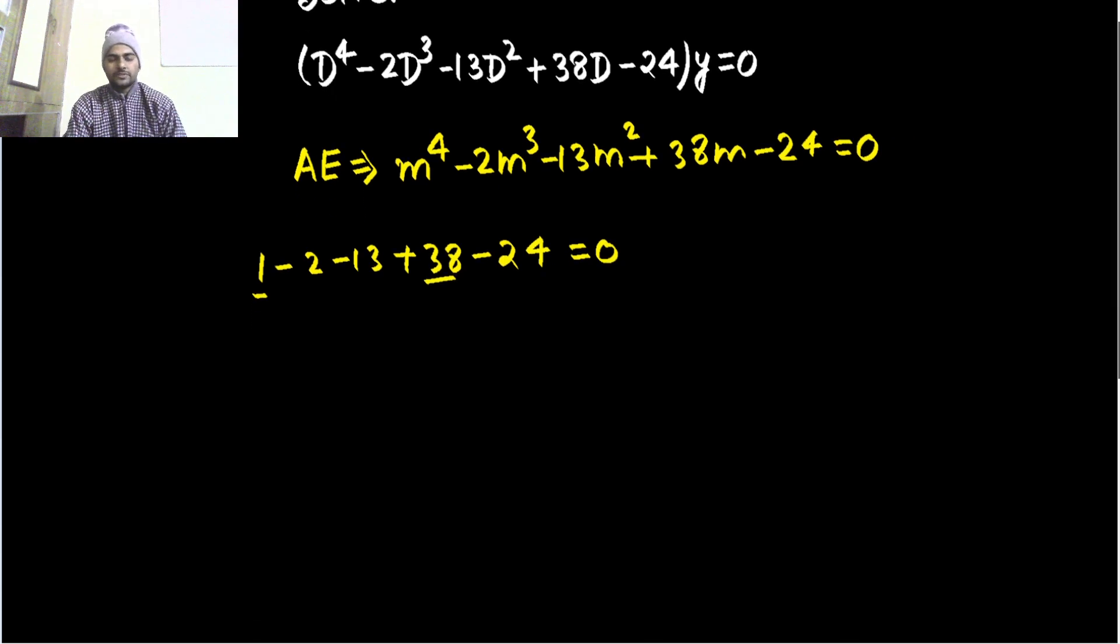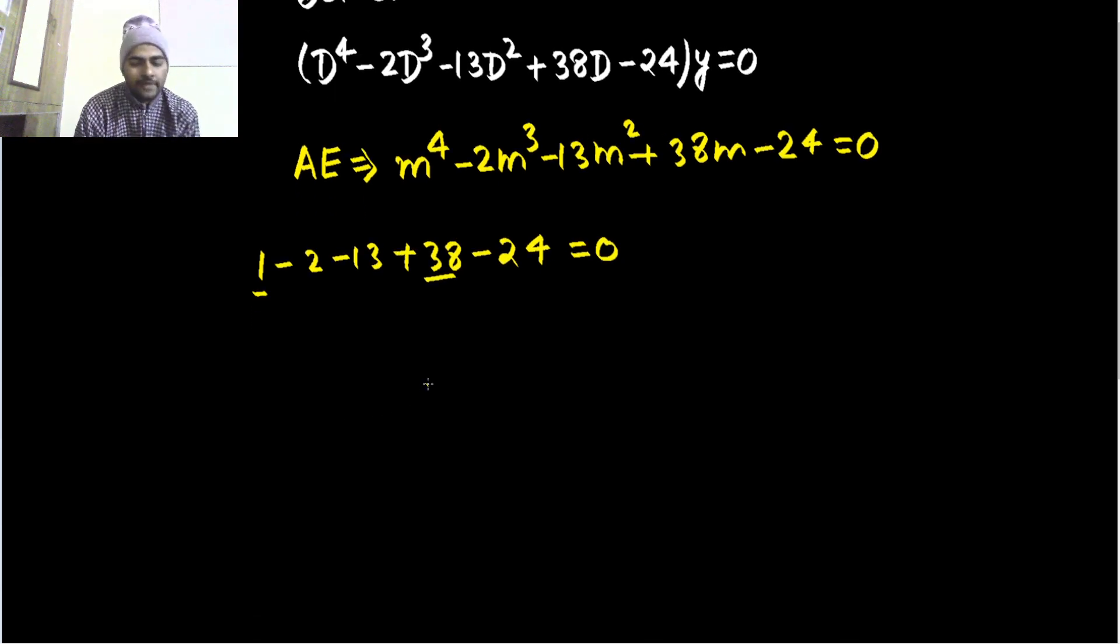When you get your first root, write it here. Now write the coefficients starting from the highest power: coefficient of M^4 is 1, M^3 is -2, M^2 is -13, M is 38, and constant is -24.